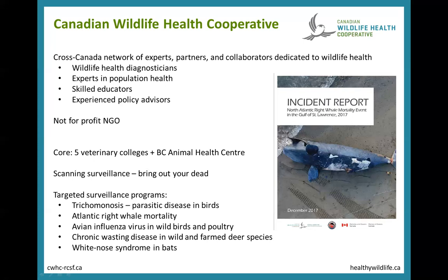Other targeted surveillance programs include avian influenza virus in birds and chronic wasting disease in deer. Wildlife health has an impact on the health of poultry and other farmed animals — deer, cows, and sheep. By keeping wildlife healthy, we keep livestock healthy, and in turn keep ourselves healthy. A final example is our targeted surveillance program for white-nose syndrome in bats, currently the biggest threat to bats in North America — one of several reasons why monitoring programs are important, because we need a better understanding of bats to better manage them and the threats they face.